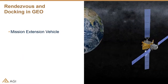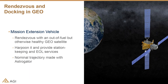One of the missions I've been helping plan is our Mission Extension Vehicle, where we send a satellite up to GEO. We will rendezvous with an out-of-fuel but otherwise healthy geocommunication satellite, harpoon it, provide station-keeping services, and drag it out to the graveyard at end of life. In all these MEV examples, the nominal trajectory was made with Astrogator, and oftentimes I'm working with an ephemeris file made from that trajectory.